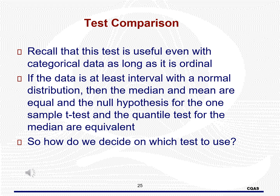If we want to run a test for the median, recall that this is the 50th percentile. If the data is normal, then the median and mean are equal. So in that case, we could use a quantile test to test the hypothesis that the mean of a distribution equals some hypothesized value. When the data is normal, we typically use a one-sample t-test to do this, so which test is better?